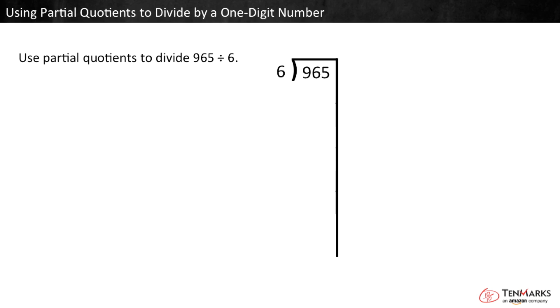With partial quotients, you don't have to find the exact number of groups right away. You can find a few groups at a time.